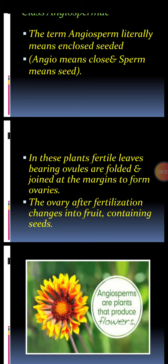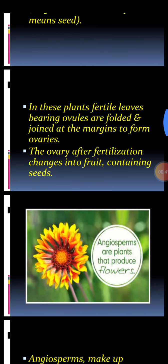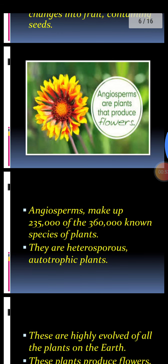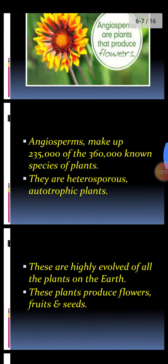folded and joined at the margins to form ovaries. The ovary, after fertilization, changes into a fruit which contains seeds. Angiosperms are the plants that produce flowers, and they make up approximately 2,35,000 of the 3,60,000 known species of plants.